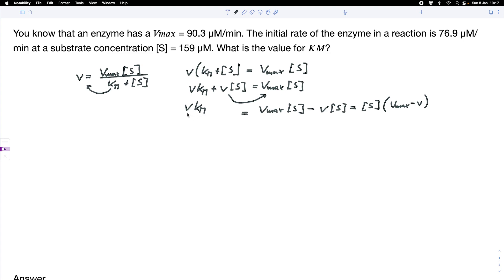And what we do now is just get rid of V, bring the V to the other side and we end up with the equation for Km. So Km would be S times Vmax minus the initial rate divided by the initial rate.